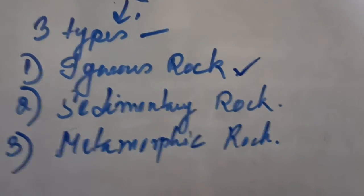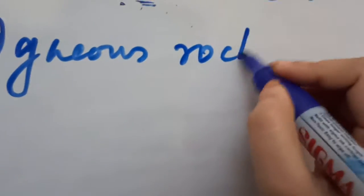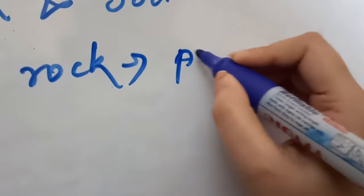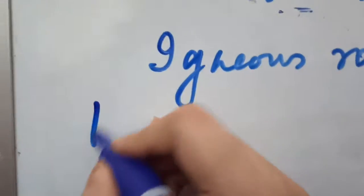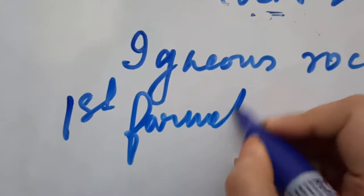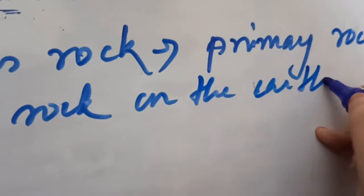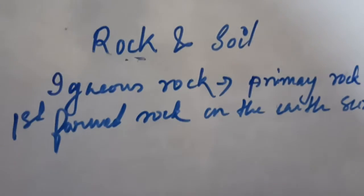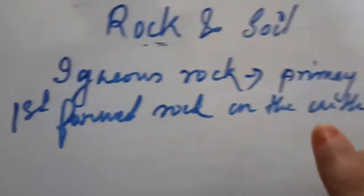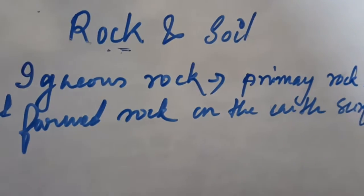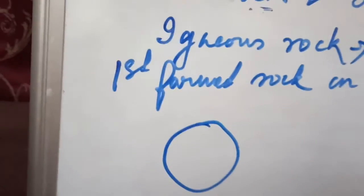The first type is the igneous rock. The igneous rock is also known as the primary rock because this is the first formed rock on the earth's surface. So because the igneous rock has formed first, it is also known as the primary rock. Initially, when the earth was this ball of